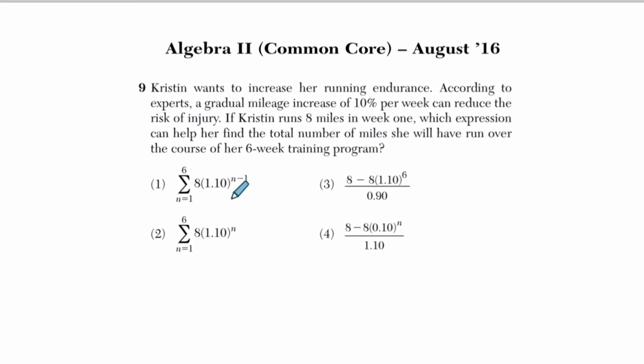Okay, so here we have a person who's increasing her running endurance. According to experts, a gradual mileage increase of 10% per week. So we're increasing by 10%, that tells me we're going to multiply by 110%. Whatever we start with, we want to increase it by 10% each week. You have to add 10% on to 100%, and that's 1.1, or 110%.